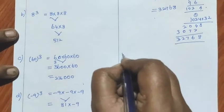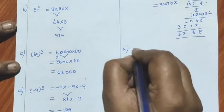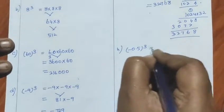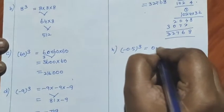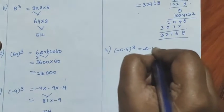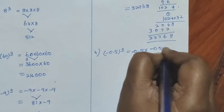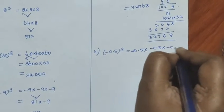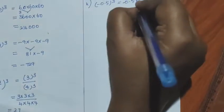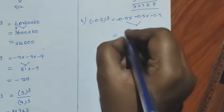Next, H sum: minus 0.5 the whole cube. So it equals minus 0.5 into minus 0.5 into minus 0.5. If you want to calculate: 5 fives are 25. This is 2 decimal places times.